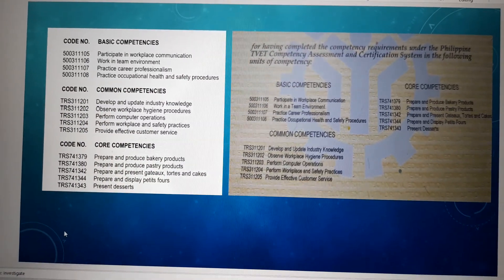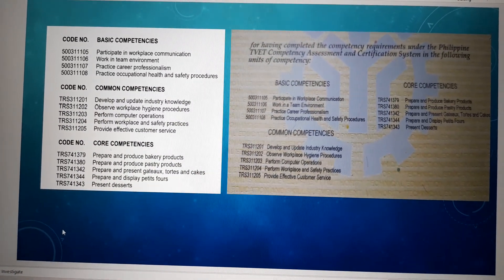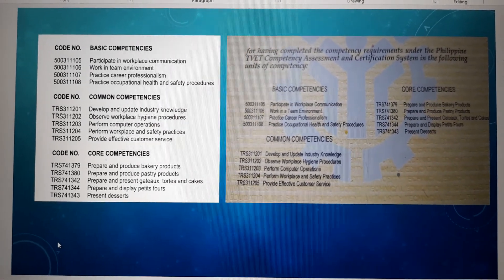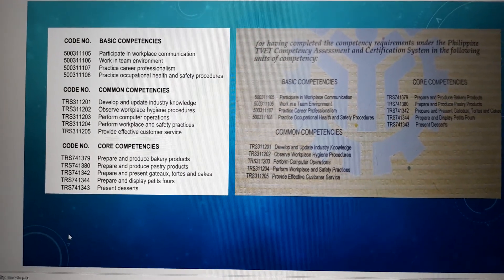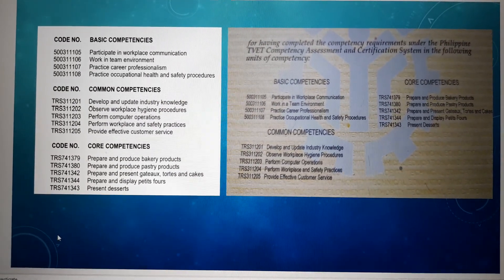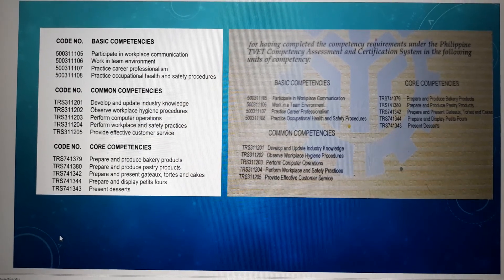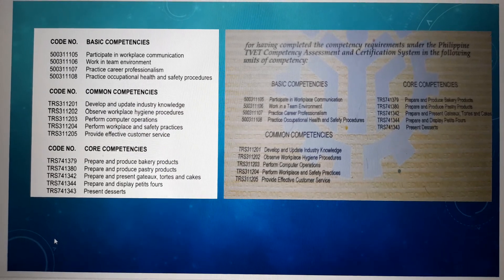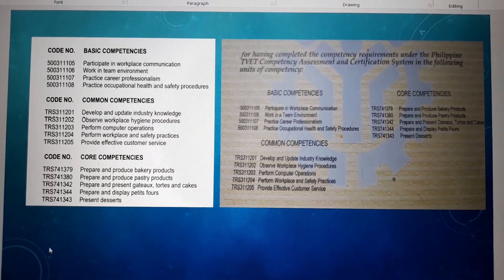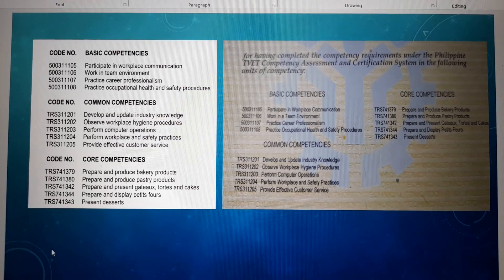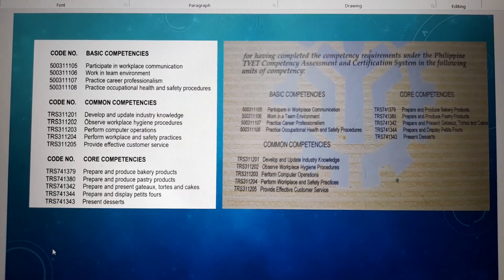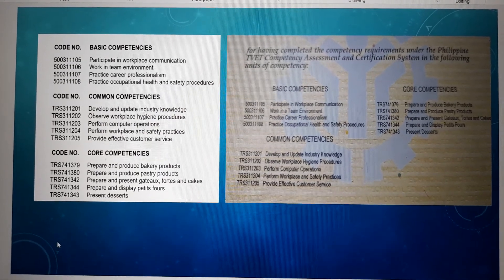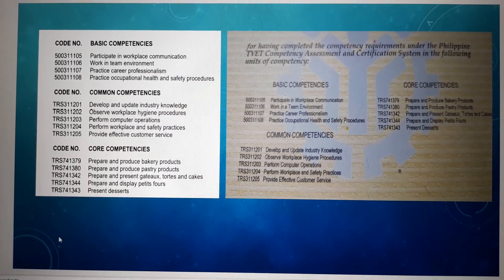Here, I'll give you some details. From the left side — the white color side — that is the basic, common, and core competency coming from the TR or the training guidelines of bread and pastry. From the right side, that is coming from the certification of qualifications that you were able to renew. If you check, there is no migrated update coming from that TR, meaning you are still capable to renew your NC2 for that qualification.